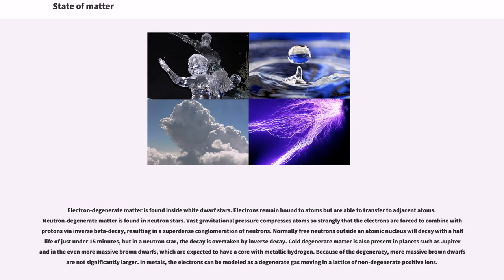Electron degenerate matter is found inside white dwarf stars. Electrons remain bound to atoms but are able to transfer to adjacent atoms. Neutron degenerate matter is found in neutron stars. Vast gravitational pressure compresses atoms so strongly that the electrons are forced to combine with protons via inverse beta decay, resulting in a super dense conglomeration of neutrons. Normally free neutrons outside an atomic nucleus will decay with a half-life of just under 15 minutes, but in a neutron star, the decay is overtaken by inverse decay. Cold degenerate matter is also present in planets such as Jupiter and in the even more massive brown dwarfs, which are expected to have a core with metallic hydrogen. Because of the degeneracy, more massive brown dwarfs are not significantly larger. In metals, the electrons can be modeled as a degenerate gas moving in a lattice of non-degenerate positive ions.